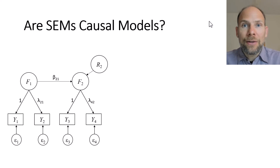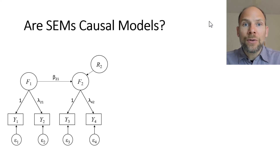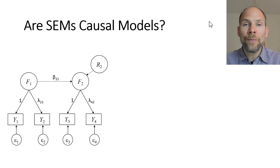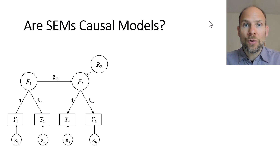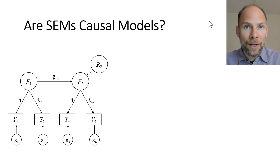In this simple example you can see a latent regression model with two factors where the factor F1 is used to predict the factor F2, and so an arrow points from F1 to F2 indicating a regression of F2 on F1 in the structural model. Many people would like to interpret a path like that in terms of a causal effect, meaning F1 would be seen as the cause of F2.